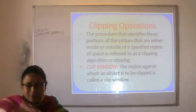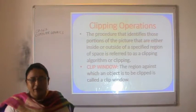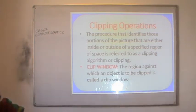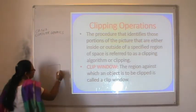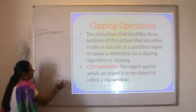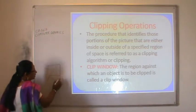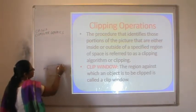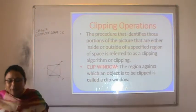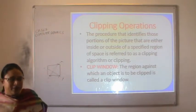The clipping operations: the procedure that identifies portions of the picture that are either inside or outside of a specified region of space is referred to as a clipping algorithm. Once we have created a window — meaning we want to see only that area of the picture visible in this window — we have to find out which points are inside the viewing/clipping window and which are outside.